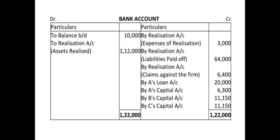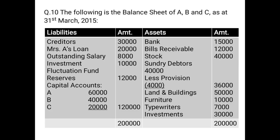This is a full-fledged question. I hope it is clear to you, children. Let us discuss one more question of the same kind — practical question number 10 from your book. The following is the balance sheet of A, B and C as at 31st March 2015. On the liability side, you can see creditors.